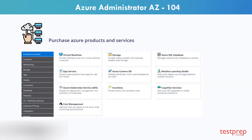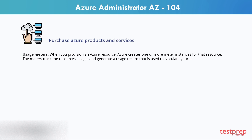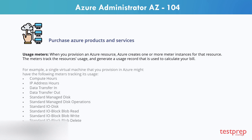Products and services in Azure are ranged by category, which has various resources that you can provision. You select the Azure products and services that fit your requirements, and your account is billed according to Azure's pay-for-what-you-use model. When you provision an Azure resource, Azure creates one or more meter instances for that resource. The meters track the resource's usage and generate a usage record that is used to calculate your bill.